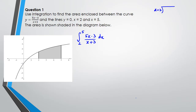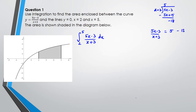So I've got (x + 3) dividing into (5x − 3). 5 times (x + 3) is 5x + 15. Taking away, negative 3 minus 15 is negative 18. So I can write (5x − 3) divided by (x + 3) as 5 minus 18 over (x + 3). That's what I'm going to use in the integral — between 5 and 2, the integrand becomes 5 minus 18 over (x + 3) dx.